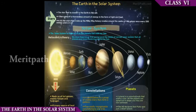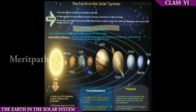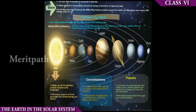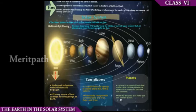The chapter: The Earth in the Solar System. The Sun is a star — a hot ball of gas. The planets are Mercury, Venus, Earth, Mars, Jupiter, Saturn, Uranus, Neptune, and of course the dwarf planet Pluto. The Sun is made up of hot gases, mainly helium and hydrogen. It is the primary source of heat and light on Earth. Constellations are groups of stars. Planets are celestial bodies that orbit a star. I hope the topic is clear.